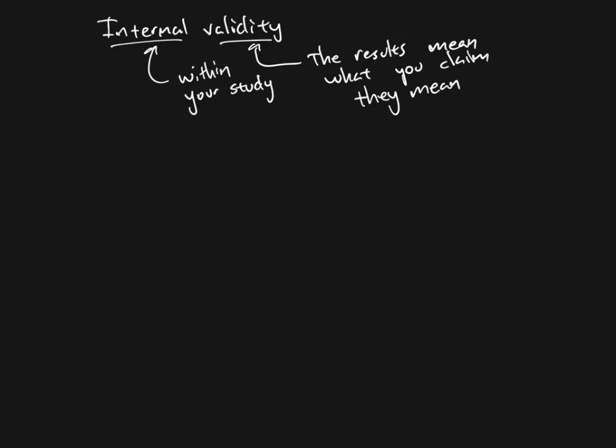Internal validity is essentially always used in cases where we're talking about experiments, meaning we are trying to demonstrate that one thing causes another. When we say the results mean what you claim they mean, we're saying specifically that X causes Y.